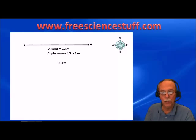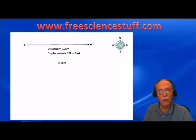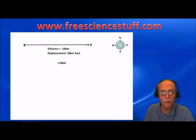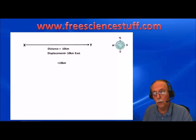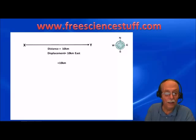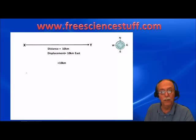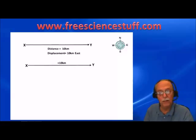Let's look at a different situation — we're going to travel 10 kilometers again. The plus sign you see here shows direction. In physics and physical sciences, plus and minus can be used to show direction. By convention, positive is either to the right or up, and negative is either to the left or down. In this case, we travel 10 kilometers from X to Y in a straight line — positive 10 kilometers.